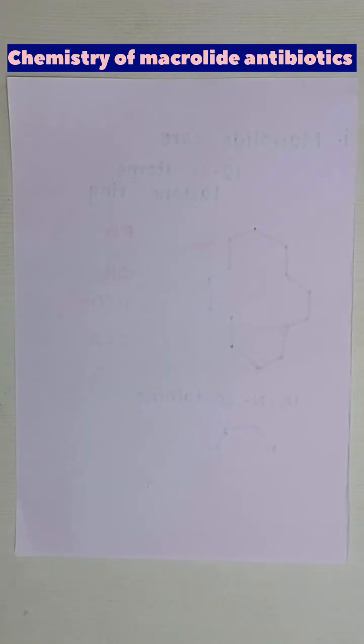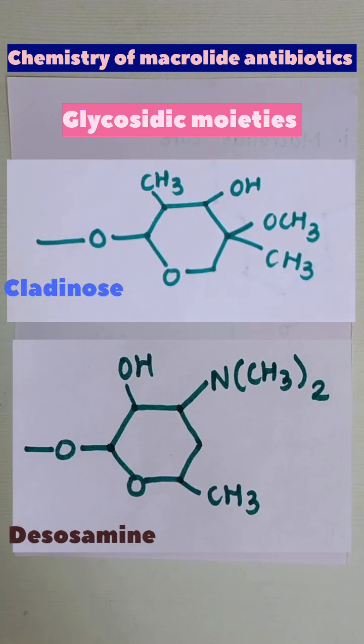The third important structural component in macrolide antibiotics are the glycosidic moieties present at the third and fifth position. Usually cladinose and desosamine are attached by the oxygen linkage.